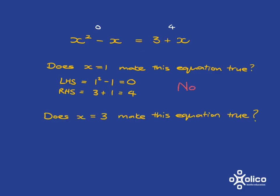Let's look at another example. Does x equal to 3 make this equation true? Well, again, let's have a look what happens when we put x equal to 3 in the left-hand side. We'll get 3 squared minus 3, which is 9 minus 3, which is 6.